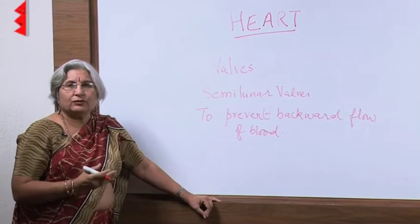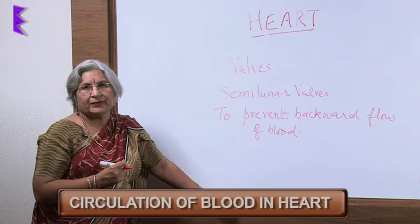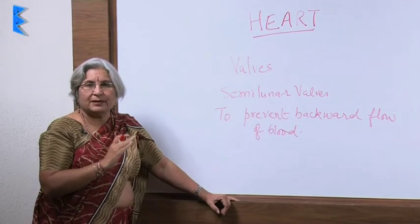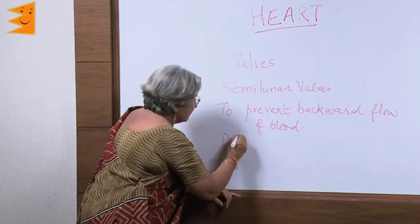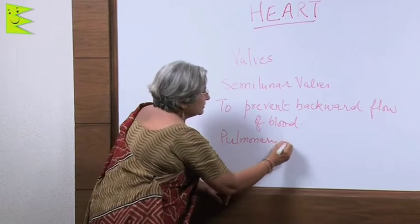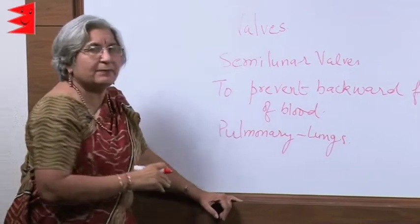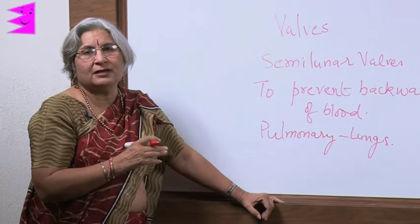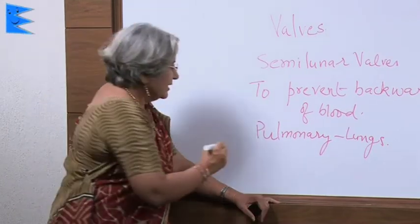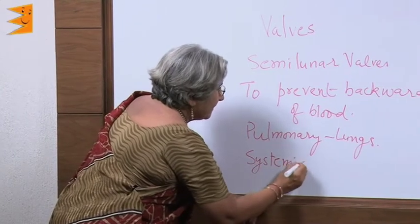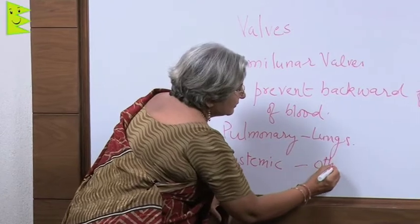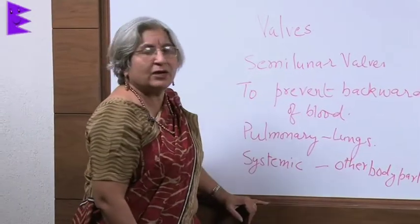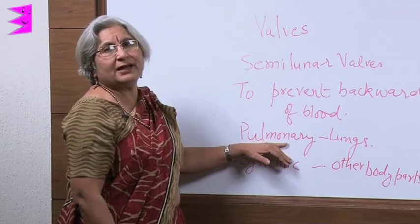The circulation of blood inside the heart can be divided into two parts: pulmonary and systemic. Pulmonary circulation involves the lungs — supplying deoxygenated blood to lungs through the pulmonary artery and collecting oxygenated blood from lungs via the pulmonary vein. Systemic circulation is concerned with all other body parts, involving the vena cava and the aorta.